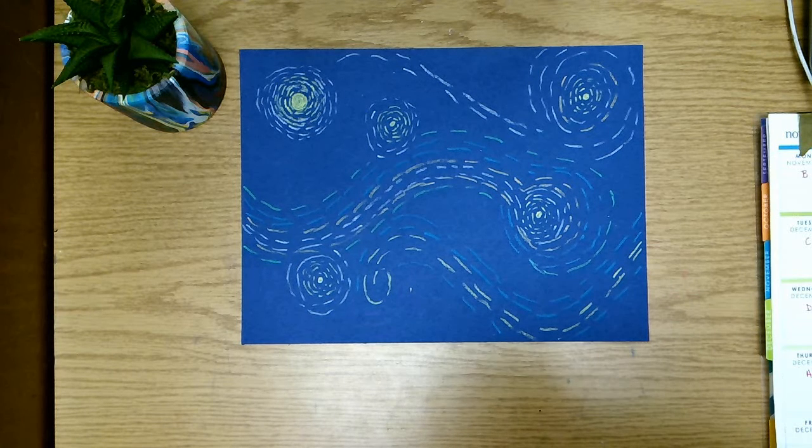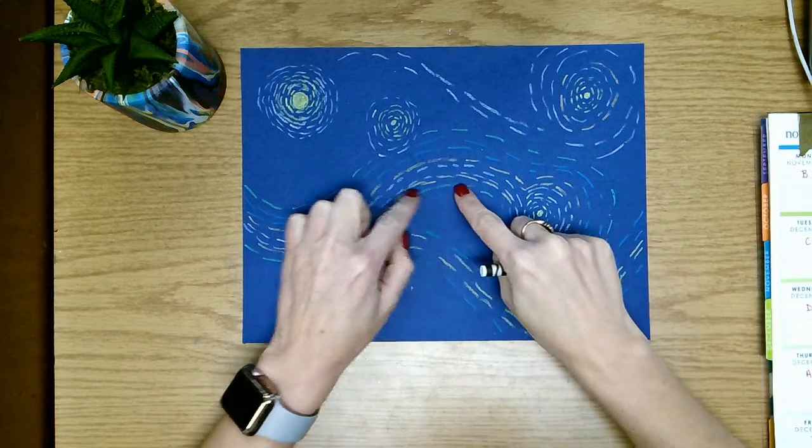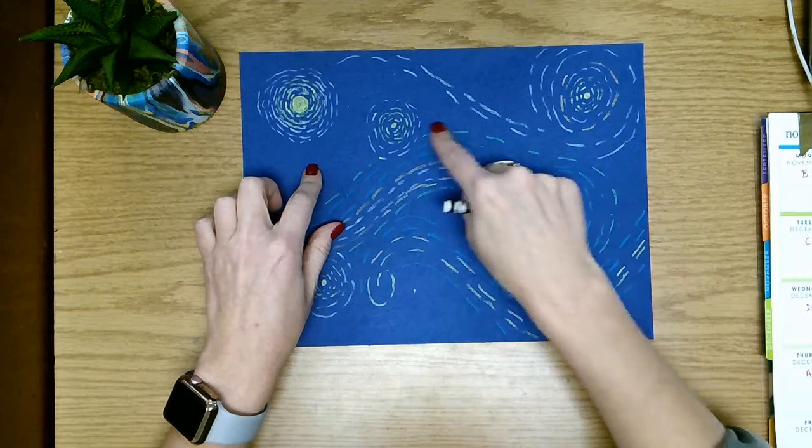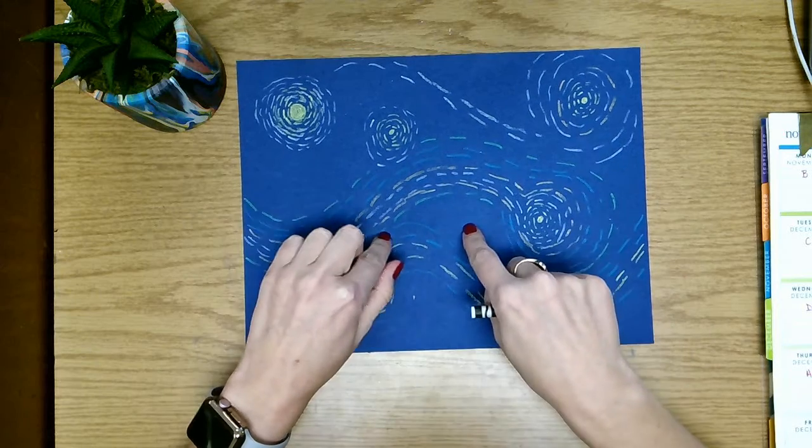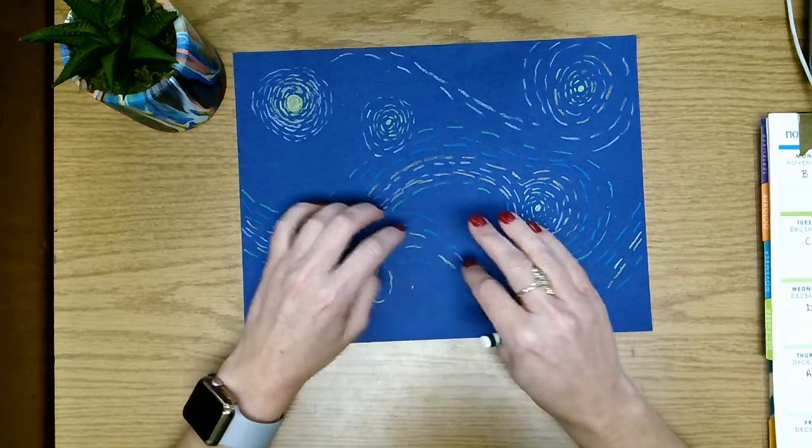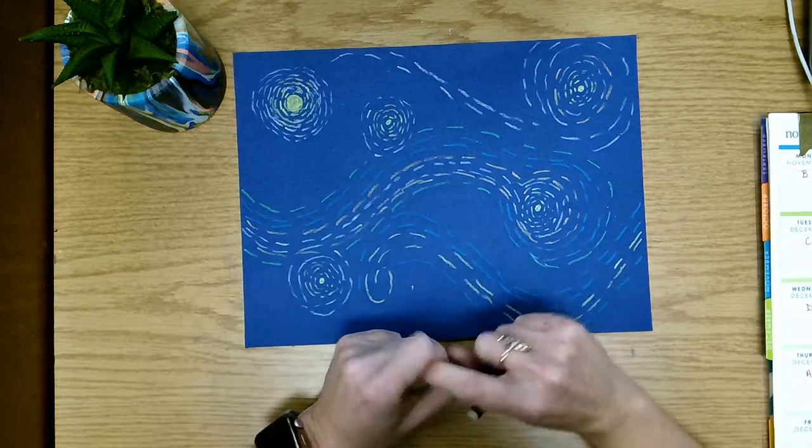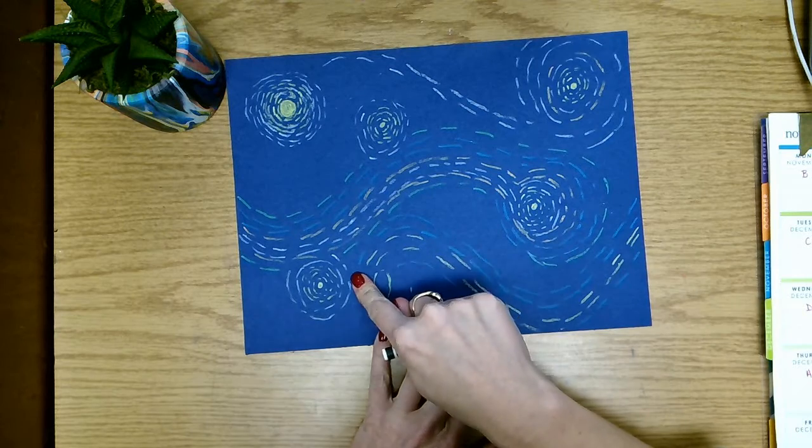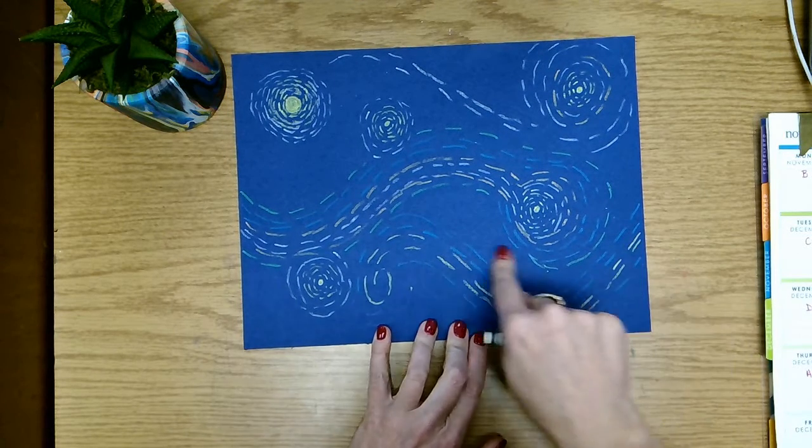One way is to have your owl's wings stretched out like he's flying. Or you could also have your owl with his wings just down by his side, where he would just be kind of standing. If you do him standing, then you might want to actually even draw a branch for him to be standing on.